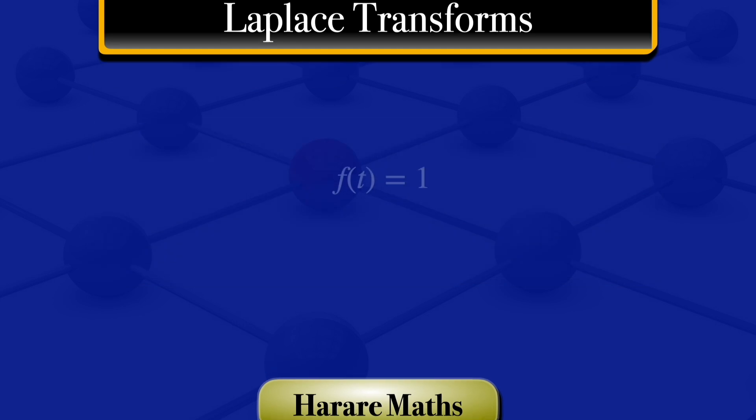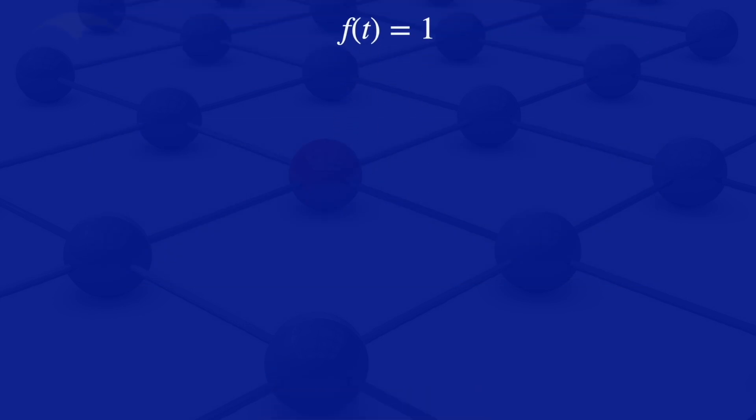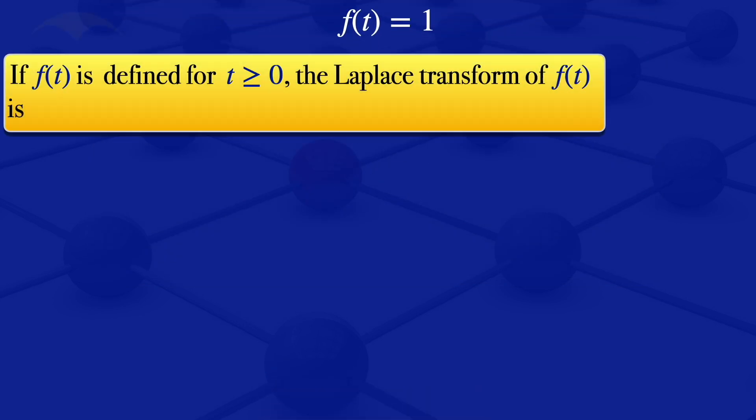Given the function f(t), the definition says that if f(t) is defined for t greater than or equals to 0, the Laplace transform of f(t) is given by F(s) equals the integral from 0 to infinity of e^(-st) multiplied by f(t) dt.